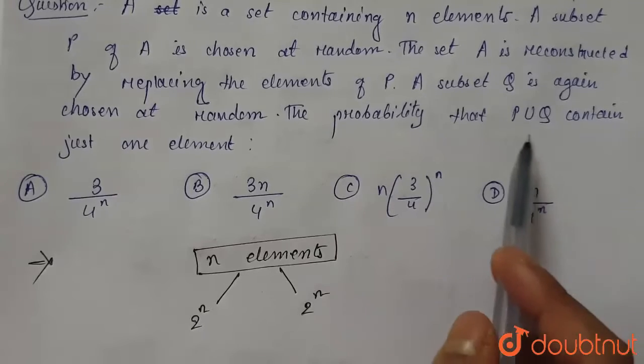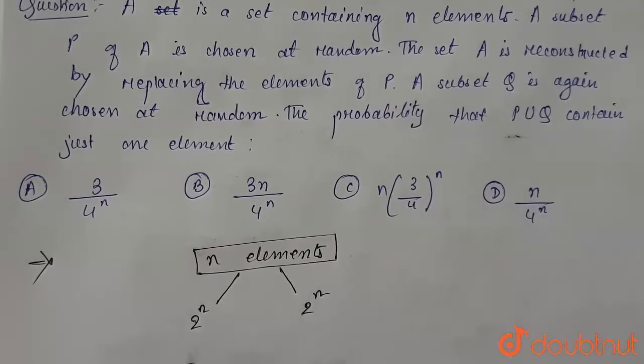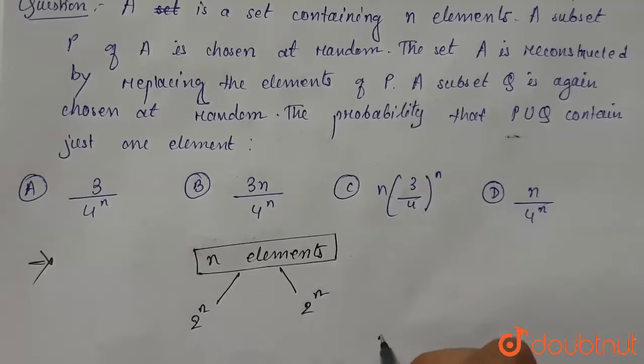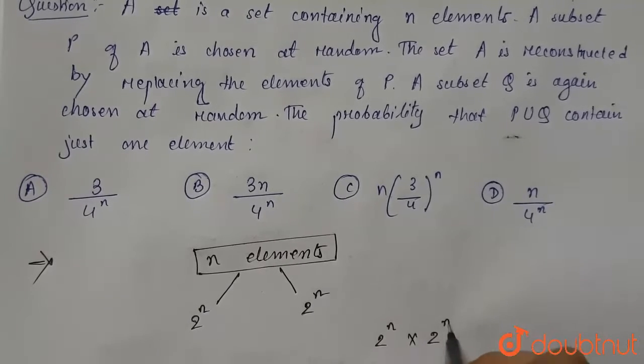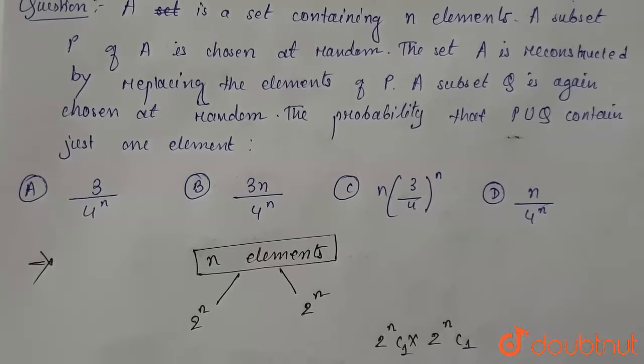If we need P and Q together as required in the question, ways to choose a subset for both P and Q is equal to 2 to the power n into 2 to the power n, which is equal to 4 to the power n.